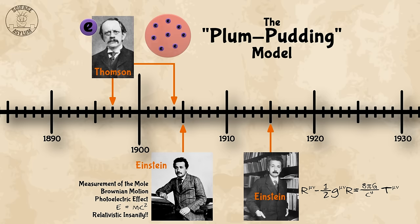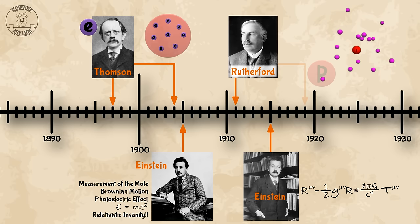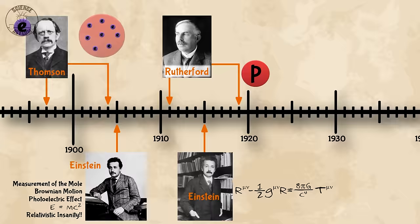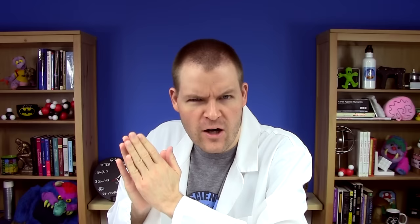Rutherford proposed a better model in 1911 with an atomic nucleus, but he wouldn't discover the proton until 1919. Unfortunately, that nucleus couldn't be made of just protons — that wouldn't predict the masses on the periodic table. We had to wait until 1932 for the discovery of the neutron to explain it. Neutral particles are really hard to find.